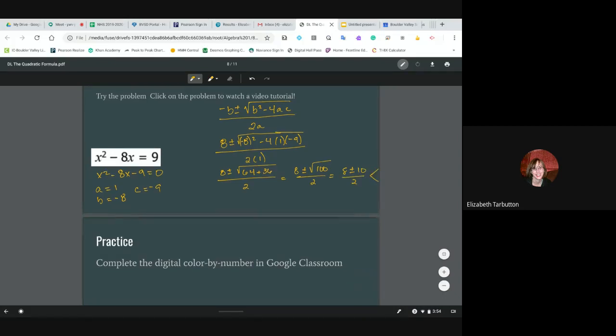So that gives us 8 plus 10 over 2, which is 18 over 2, which is 9. And 8 minus 10 over 2, which is negative 2 over 2, which is negative 1. So our two answers are 9 and negative 1.